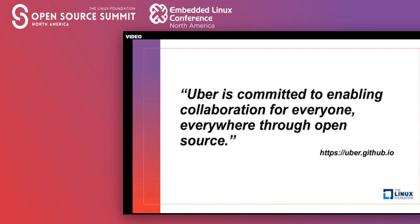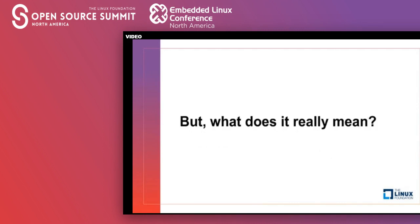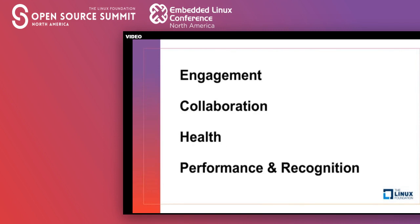Uber is aligned with these open source expectations, and is specifically focused on this concept of collaboration. What does it really mean — this concept of intelligent open source? There are four main areas we want to focus on: engagement, collaboration, health, and performance and recognition of good work and new contributors in the community.